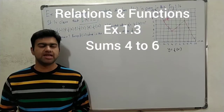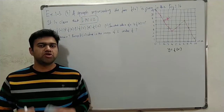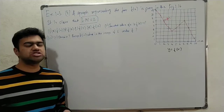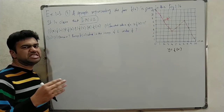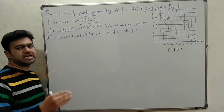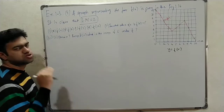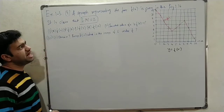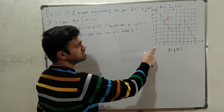Hi friends, welcome to my channel Learn with Vias. In this video we are doing Exercise 1.3. This is a continuation video — if you look at my functions basic video, we will go from that. So we will sum up the fourth sum: the graph of function f is given in figure 1.16.